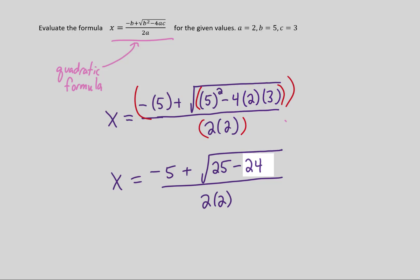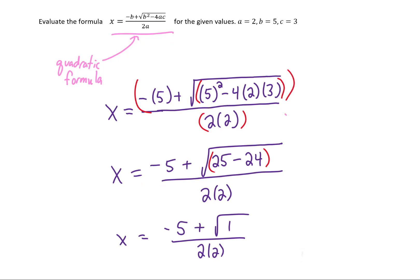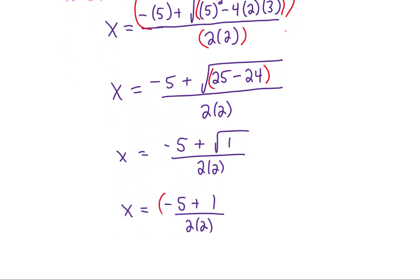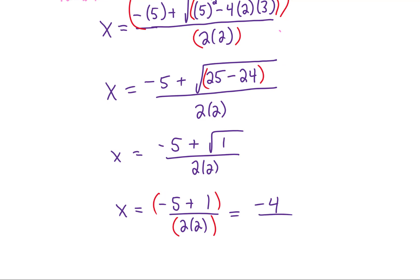We compute 5 squared equals 25, and 4 times 2 times 3 equals 24. Then 25 minus 24 equals 1, and the square root of 1 is just 1. Simplifying the numerator gives negative 5 plus 1 equals negative 4, and the denominator is 2 times 2 equals 4. Dividing negative 4 by 4 gives a final answer of x equals negative 1.